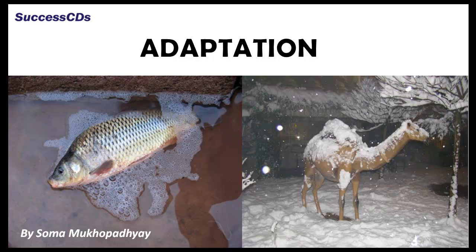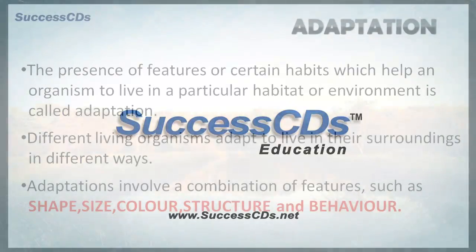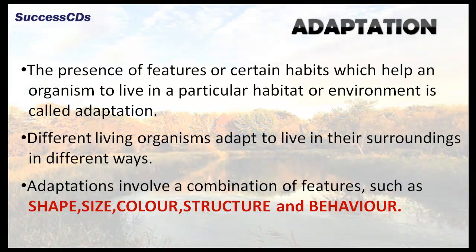Have you ever imagined what will happen if you keep a fish out of water or a camel in snowbound areas? They will not survive. They have developed features which help them to live or adapt in their respective surroundings, i.e. water and desert. By adaptation, we mean the presence of features or certain habits which help an organism to live in a particular habitat or environment. Different living organisms adapt to live in their surroundings in different ways.